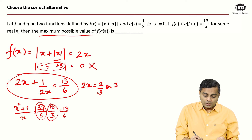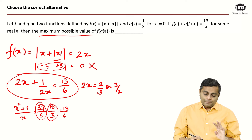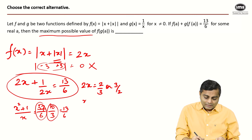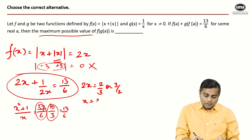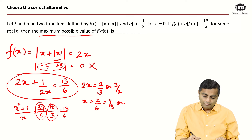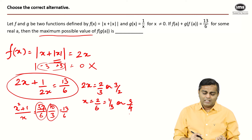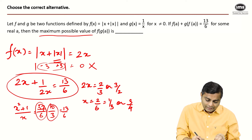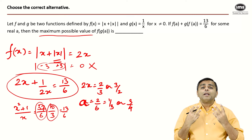So 2a = 2/3 gives a = 1/3, and 2a = 3/2 gives a = 3/4. These are the two possible values of a.